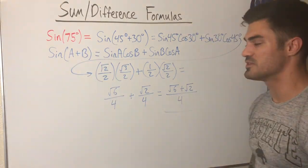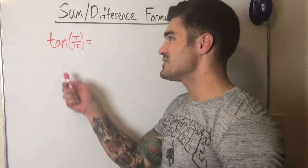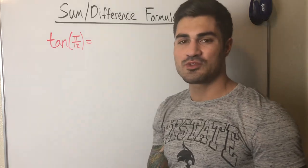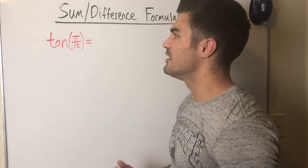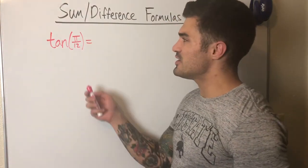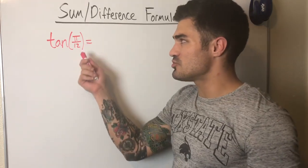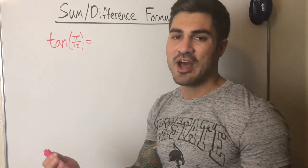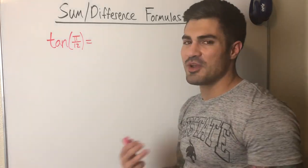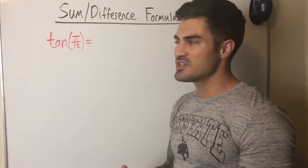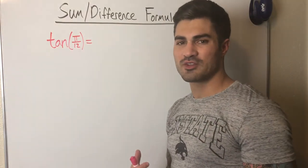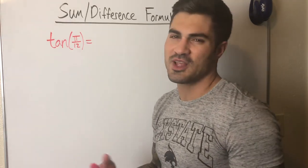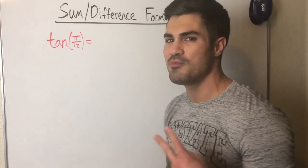For the next example we have tangent of π/12. The angle is in radians, which makes it a bit trickier because we need two angles that add or subtract to get π/12, and those angles must be ones we know from the unit circle — like π/3, π/4, π/6. None of those are over 12, so we have to find combinations with a common denominator of 12.